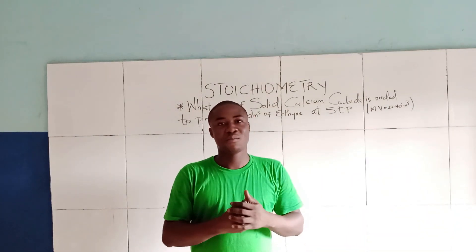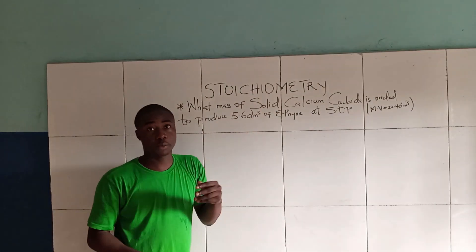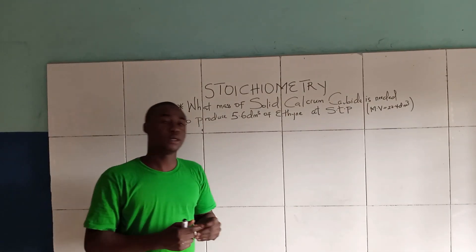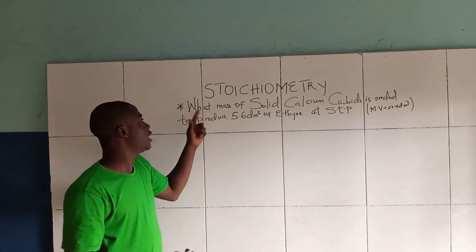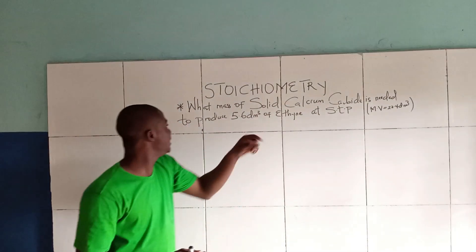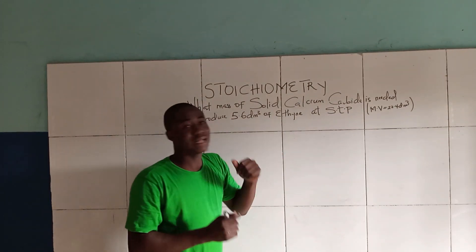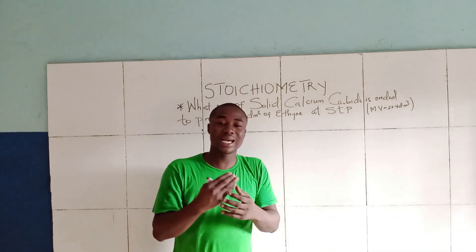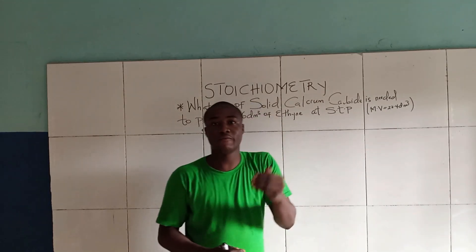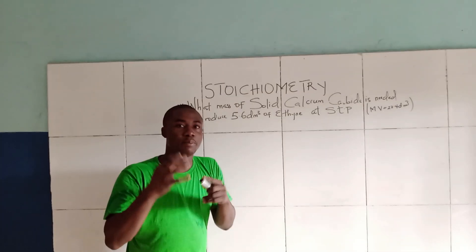Hello my dear students and welcome back to my YouTube channel. In today's lesson I'll be teaching on stoichiometry, where I'll be solving this question: what mass of solid calcium carbide is needed to produce 5.6 dm³ of acetylene at STP, where STP means standard temperature and pressure, given the molar volume as 22.4 dm³.